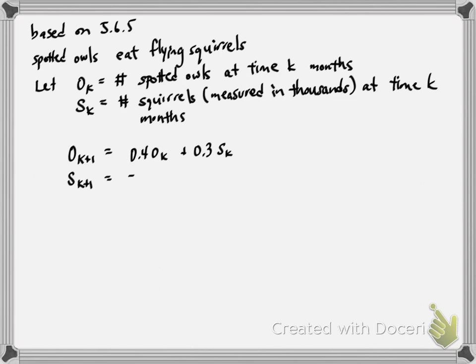Suppose that the number of owls at time K plus 1 is 0.4 times the number of owls at time K plus 0.3 times the number of squirrels in thousands at time K. And similarly, the number of squirrels at time K plus 1 is negative 0.5 times the number of owls plus 1.2 times the number of squirrels.